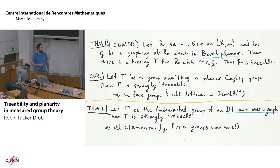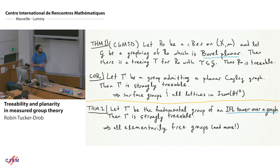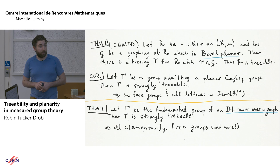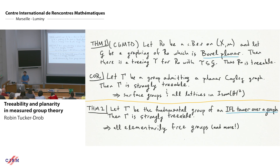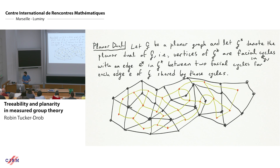Groups with planar Cayley graphs are strongly treeable. This already gives us that surface groups and all lattices in the isometry group of the hyperbolic plane are strongly treeable. To handle elementarily free groups, we use an algebraic description of what elementarily free groups look like due to Sela and Kharlampovich-Miasnikov. We look at a slightly more general construction: groups that are fundamental groups of what we call an IFL tower over a graph. Every fundamental group of an IFL tower over a graph is strongly treeable, and this is how we get elementarily free groups and more.